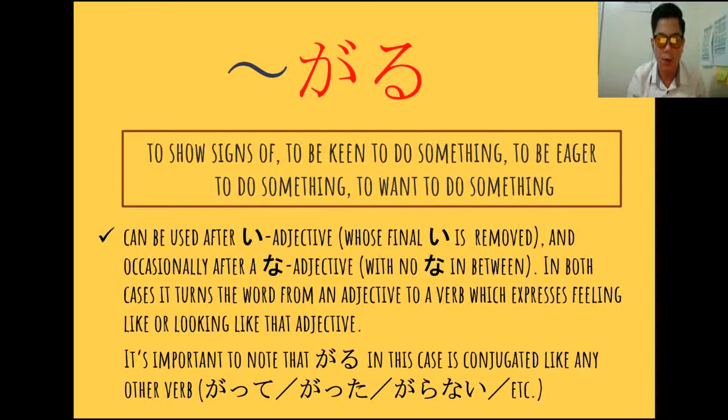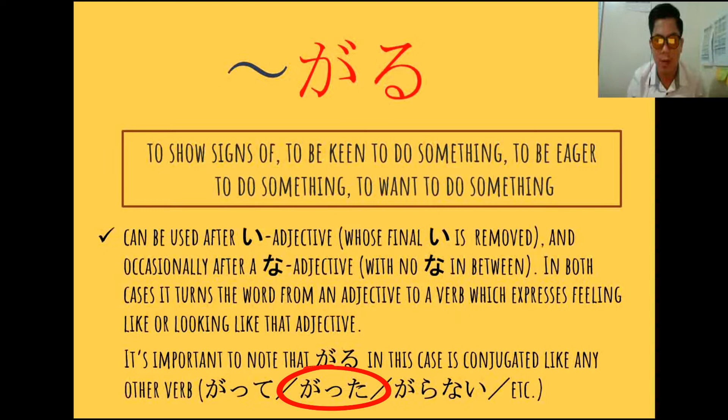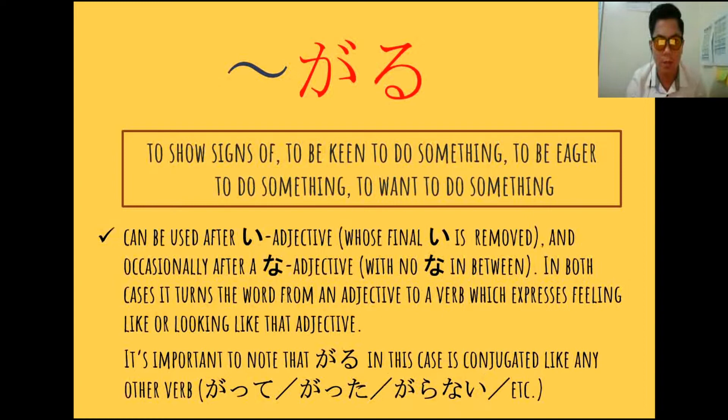For example, pag kinunjugate natin siya into te-form, so it will become gatte. Then for ta-form, so magiging gatta siya. Then pag kinunjugate natin siya sa nai-form, so magiging garanai siya. Ito yung mga dapat natin tandaan before tayo gagawa ng sentence using this pattern.